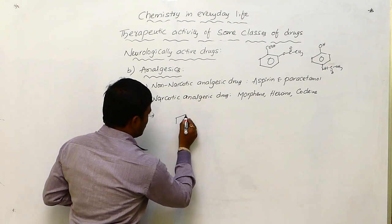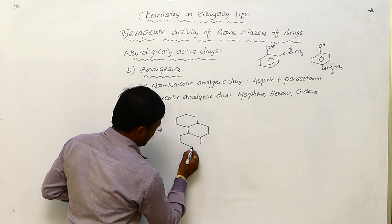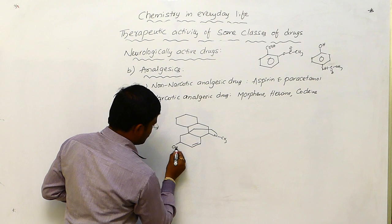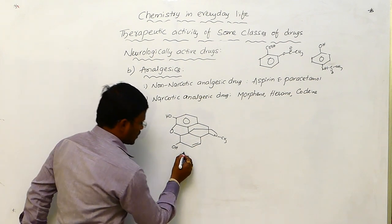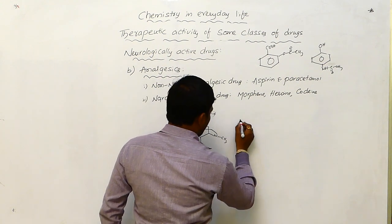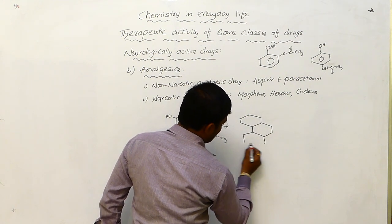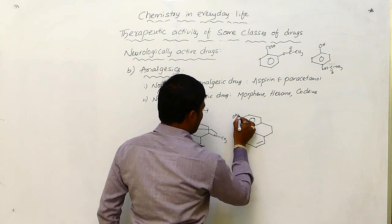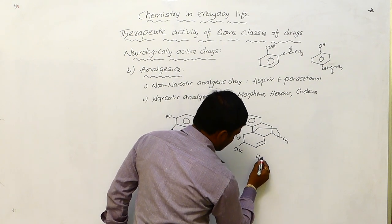Come to morphine. The structure of morphine is presented as: NCH3, where OH, OH, and there is a 5-membered oxygen ring. This is the structure of morphine. Whereas, in place of the two hydroxy groups of morphine, if they are substituted with acetyl groups — OAc, OAc — with the same NCH3, the resulting compound is called as heroin.